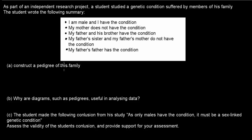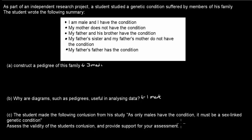Part A: Construct a pedigree of his family — worth 3 marks. Part B: Why are diagrams such as pedigrees useful in analyzing data — worth 1 mark. Part C: The student made the following conclusion from his study: 'As only males have the condition, it must be a sex-linked condition.' Assess the validity of the student's conclusion and provide support for your assessment — worth 2 marks.